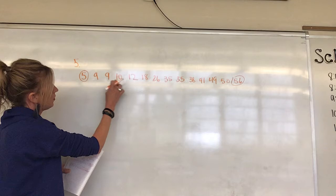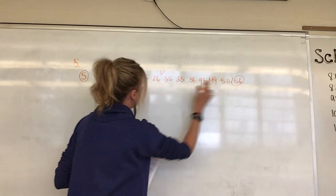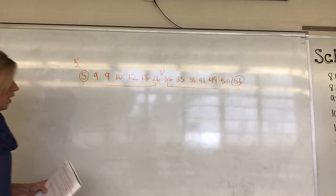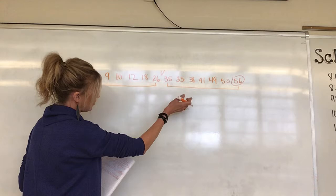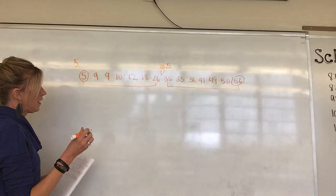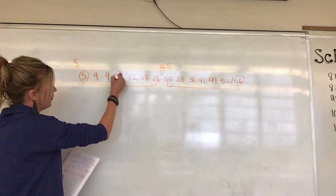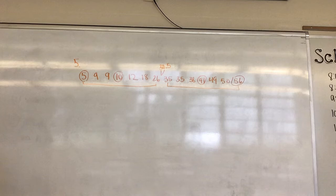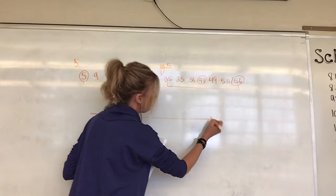We have our least (5) and greatest (56). Since there are 14 values — even — we count over: one, two, three, four, five, six, seven from each end. There's no perfect middle, so what falls between 26 and 35? Add them and divide by two: that gives us 30.5 as the median. For the lower quartile, count one, two, three — the middle of those four is between 9 and 12, giving 10.5. For the upper quartile, between 41 and 49, giving 45.